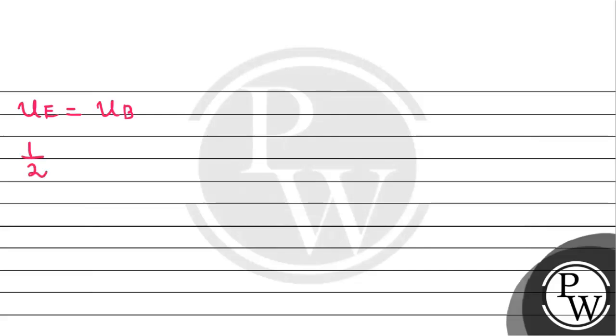So we will get one-half epsilon naught E square is equal to one-half B square divided by mu naught. As the one-half cancels, we will take E square by B square as a ratio. So this will be equal to one by mu naught into epsilon naught.